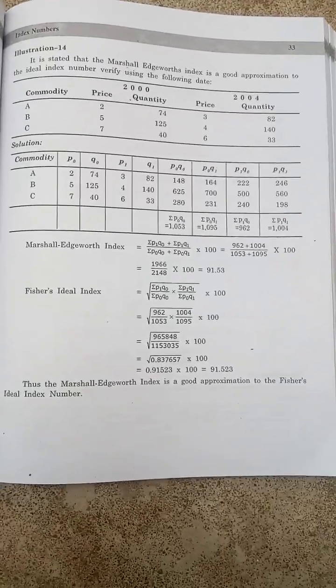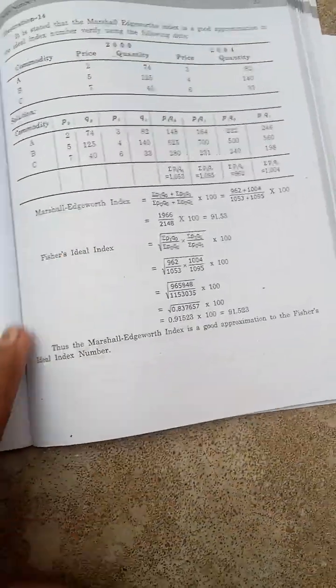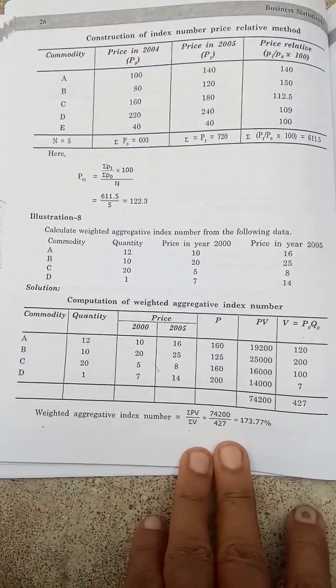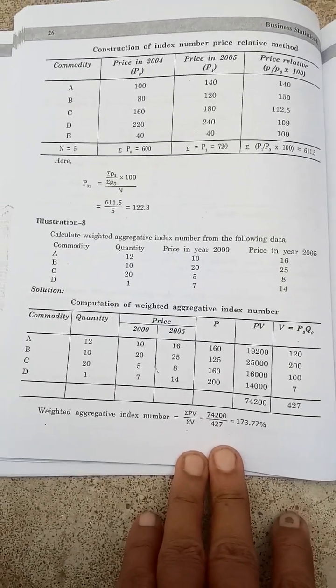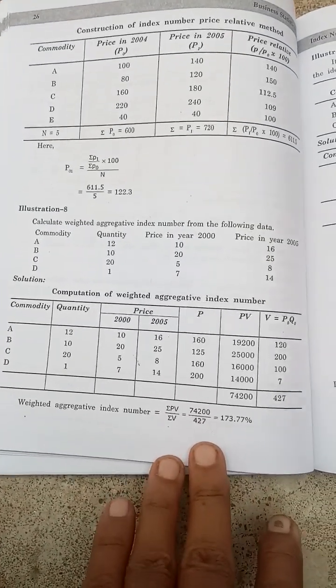As I said, cost of living index number is most important. Do this problem, just give some time. The formula is sigma pv by sigma v.